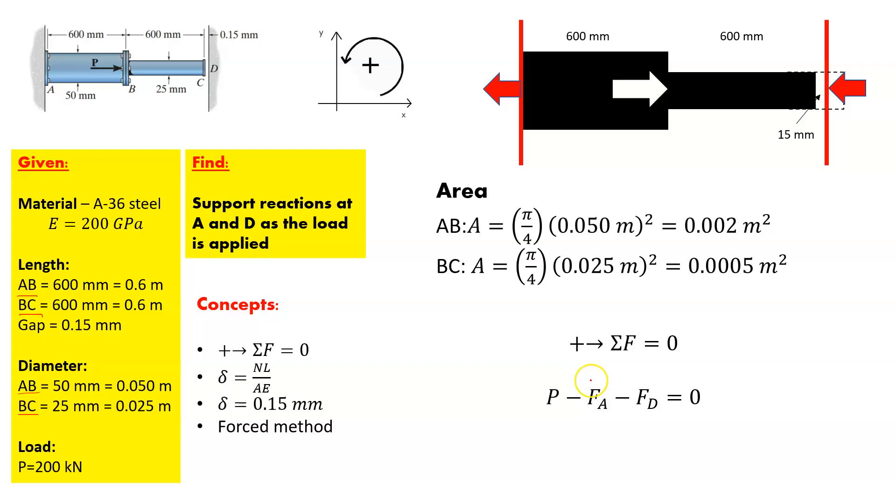So if you look at what all forces are at play here, you've got the load P that's being applied minus the reaction at A and the reaction at D is going to equal 0. So that comes out that P is equal to F_A plus F_D, which is all going to still come out to 200 kilonewtons.